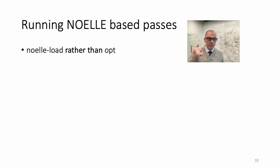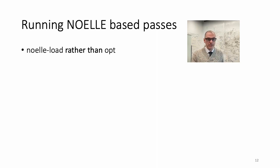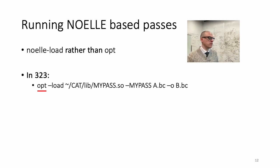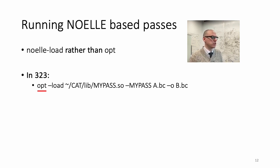Let's say you implemented that pass and you only wanted to print how many IR instructions exist in a program. How do you run it? Instead of invoking OPT — the command line you learned in class 323 — where you do: opt, then minus load, whatever your pass is installed as (for example, home/catlib/mypass.so), then invoke your pass and apply it to a bitcode file and store the new IR. That is the conventional way to invoke an externally developed LLVM middle-end pass using OPT.